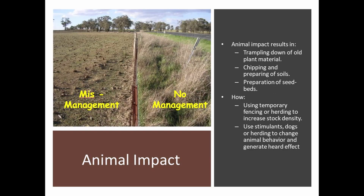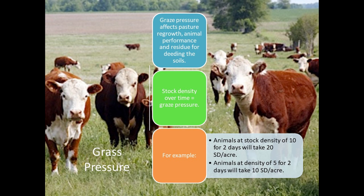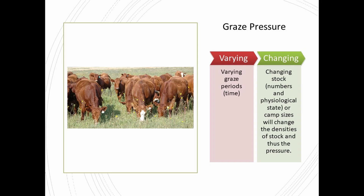Animal impact results in the trampling down of old plant material, the chipping and preparing of the soil, and preparation of seed beds. Grazing pressure affects the pasture's regrowth, animal performance, and residue for feeding the soil. Stock density over time equals grazing pressure. For example, animals at a stock density of 10 for two days will yield 20 stock density per acre, while animals at a density of 5 for two days will yield 10 stock density per acre. Stock density can be changed by either changing the number of animals or the amount of time those animals are on a specific piece of land.